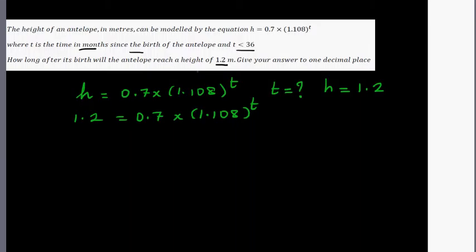Now we can divide both sides by 0.7. So if we divide this side by 0.7, then divide this side by 0.7. So this equation changes to 1.2 divided by 0.7, which is the same as 12 over 7 or 12 divided by 7, is equal to 1.108 raised to t.